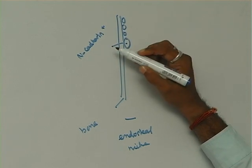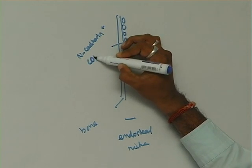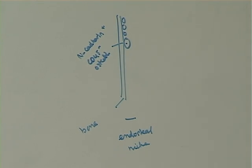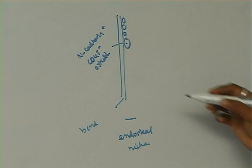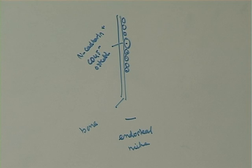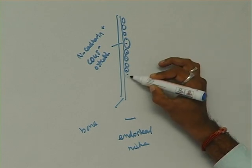N-cadherin positive, CD45 negative osteoblasts act as the cellular form of the niche. And then there will be other osteoblasts here and these are the HSCs that are attached.